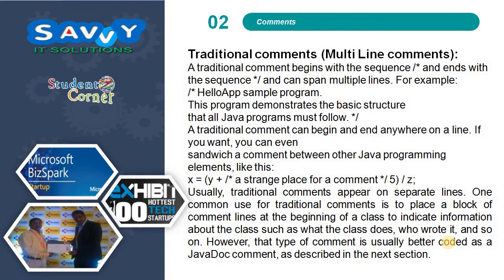Now we discuss traditional comments, also called multi-line comments. A traditional comment begins with the sequence /* and ends with the sequence */ and can span multiple lines. For example, three lines can be commented at once. A traditional comment can begin and end anywhere on a line.